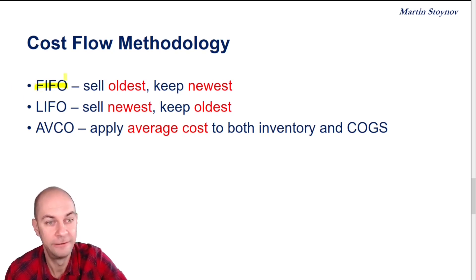FIFO stands for First In, First Out. LIFO stands for Last In, First Out. And then there's a third methodology known as AVCO, which stands for Average Cost. That one will be quite easy because the conclusions for AVCO will always be in the middle between FIFO and LIFO.